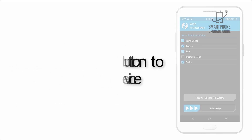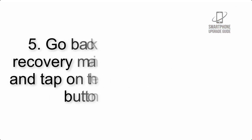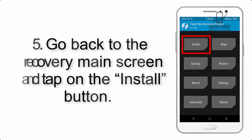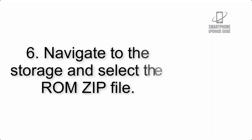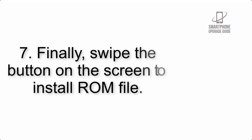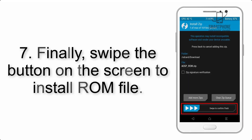Step 4: Swipe the button to wipe the device. Step 5: Go back to the recovery main screen and tap on the Install button. Step 6: Navigate to the storage and select the ROM zip file.